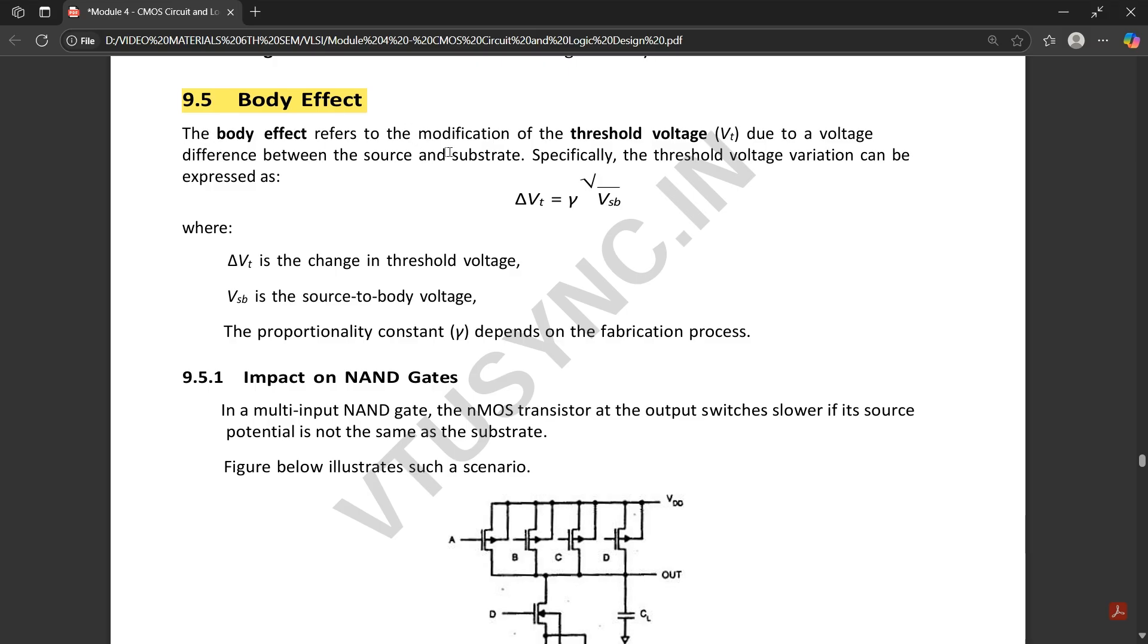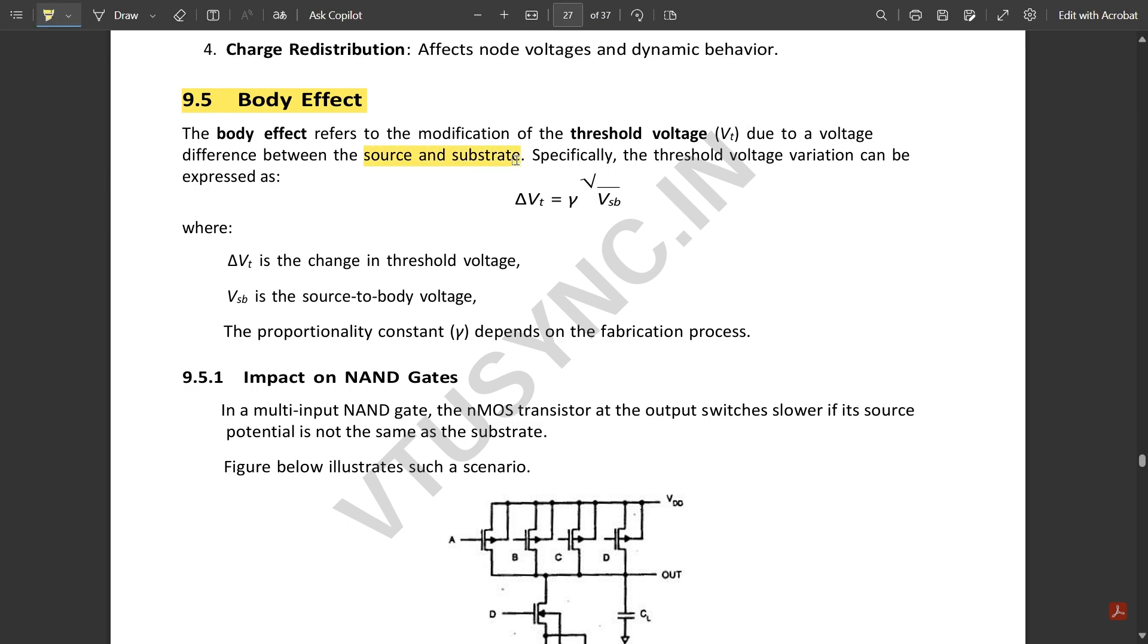Body effect refers to the modification of the threshold voltage Vt due to the voltage difference between source and substrate. Specifically, the threshold voltage variation can be expressed as ΔVt equals gamma times square root of phi divided by Vsb.